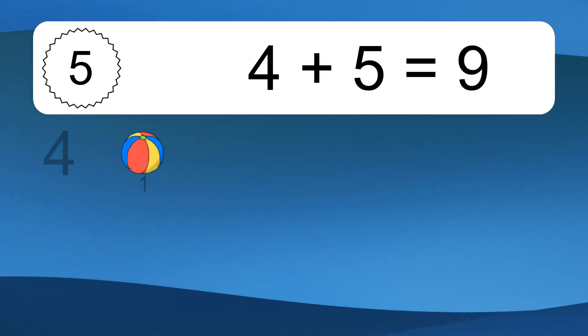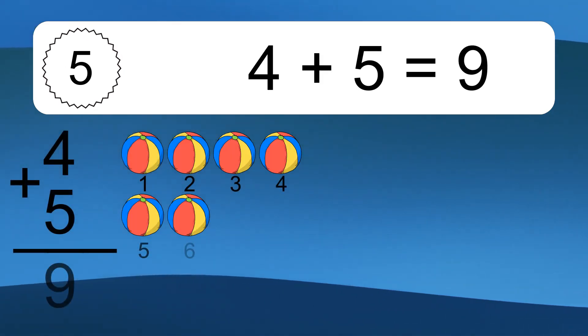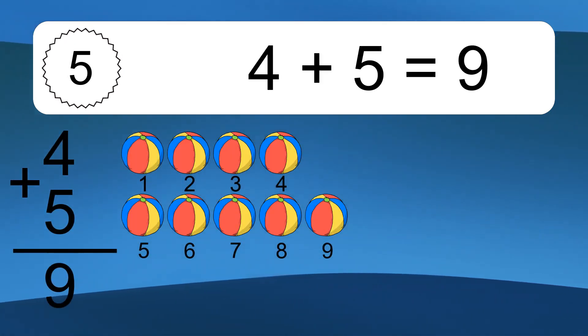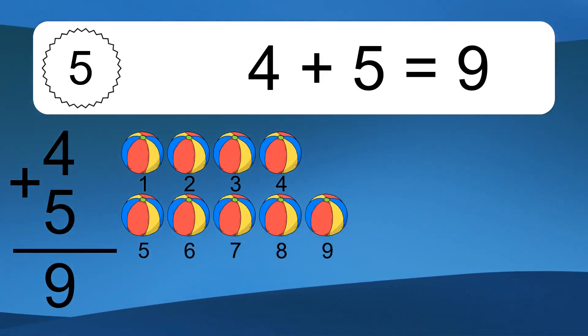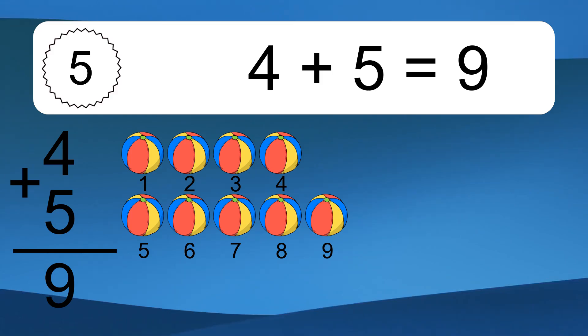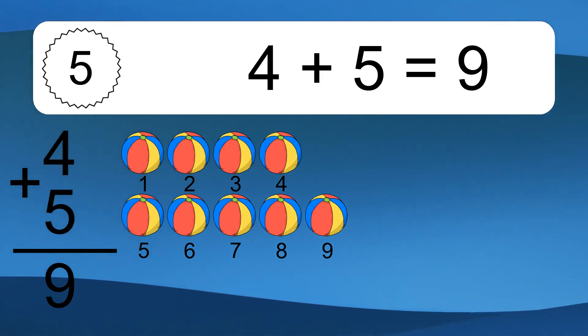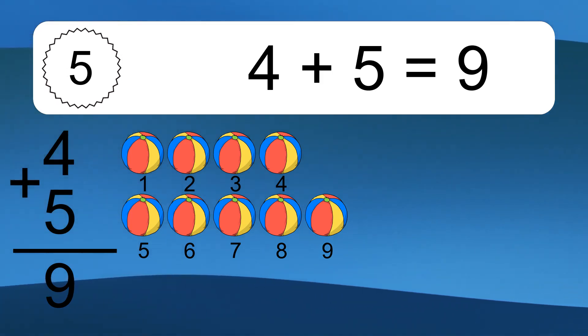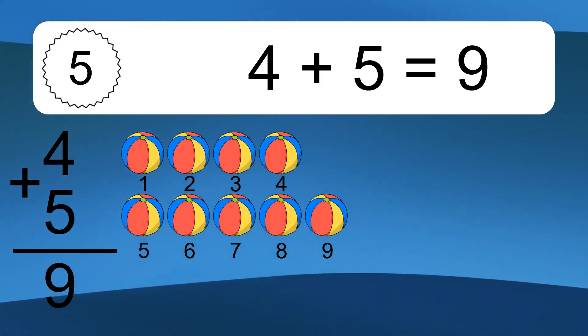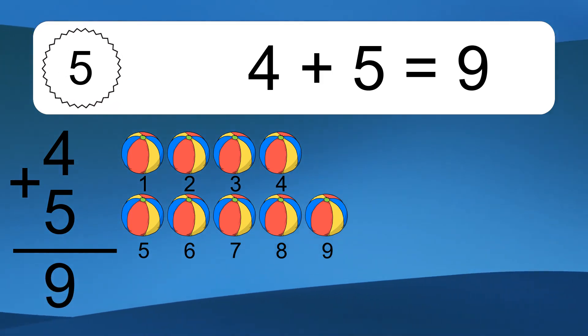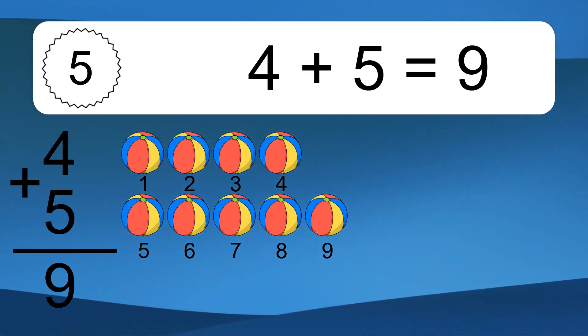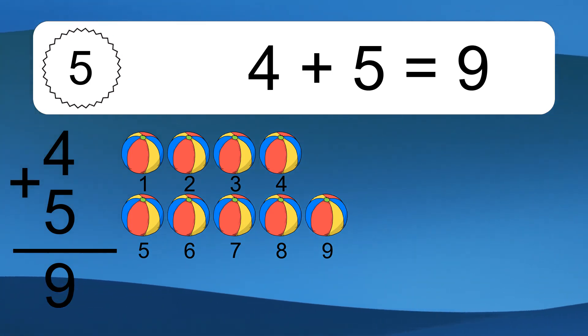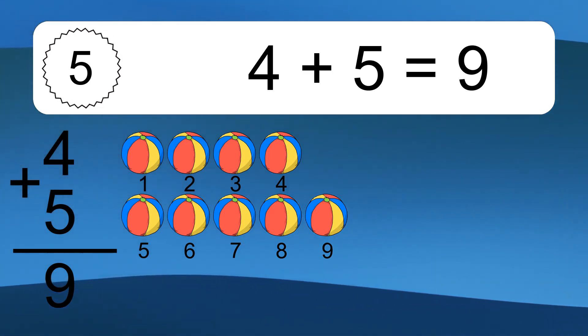4 plus 5 equals 9. Let's count it. 1, 2, 3, 4, 5, 6, 7, 8, 9.